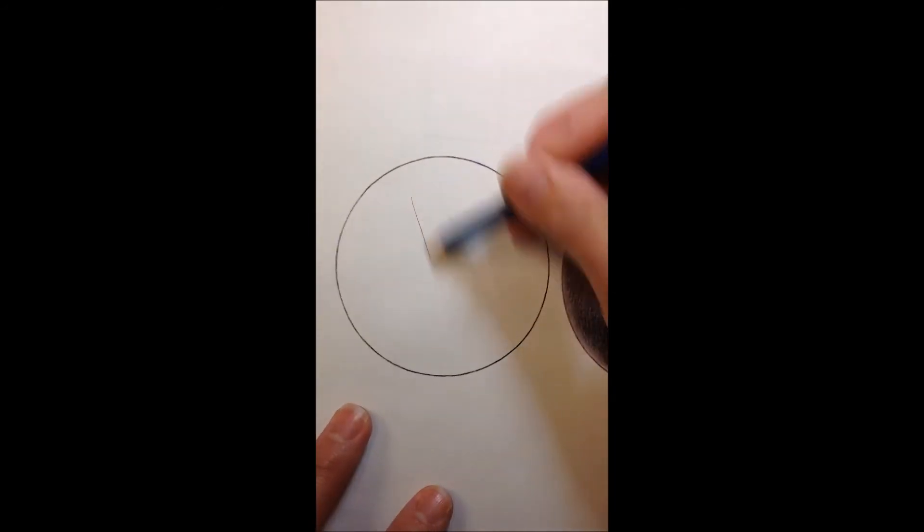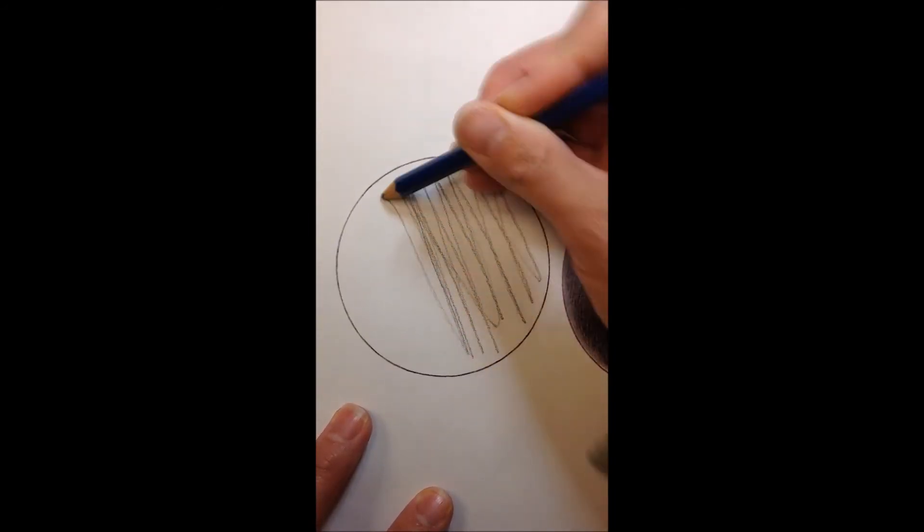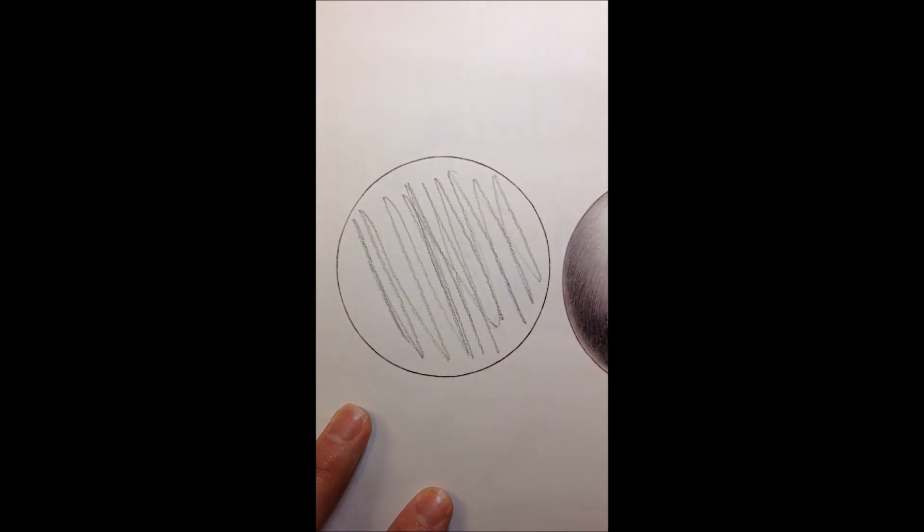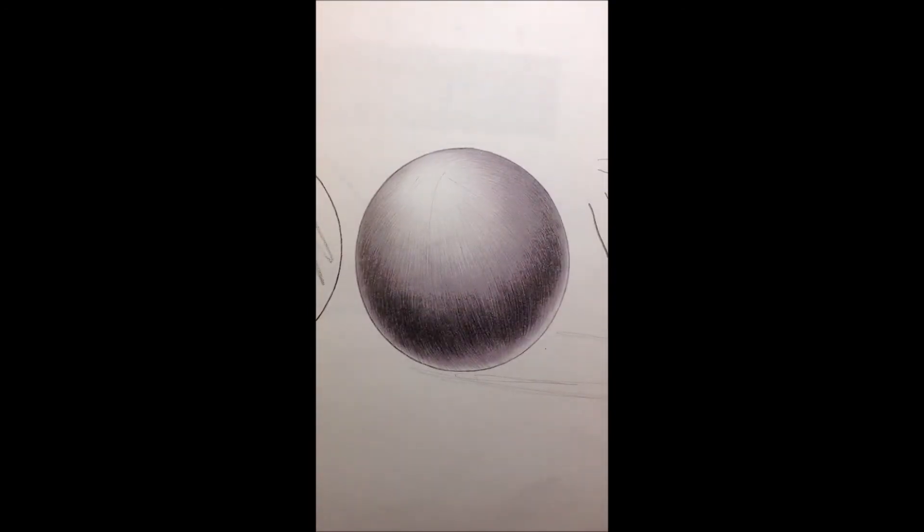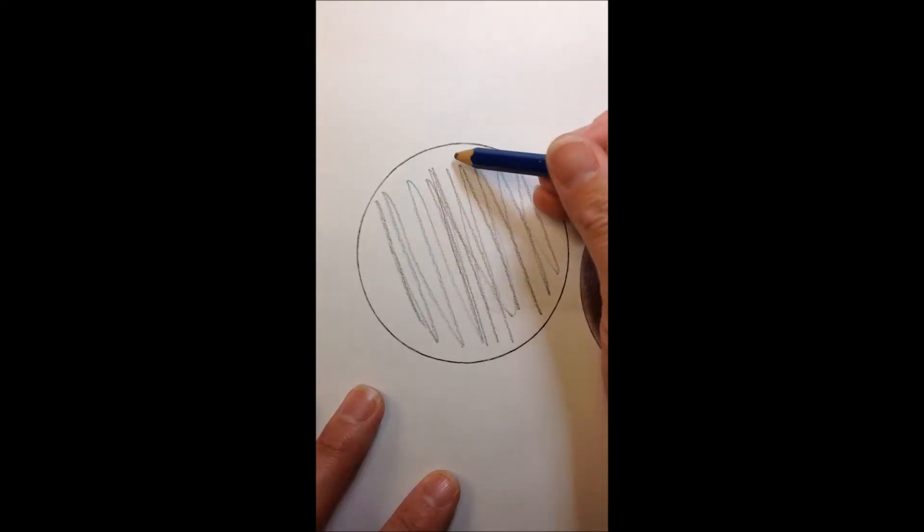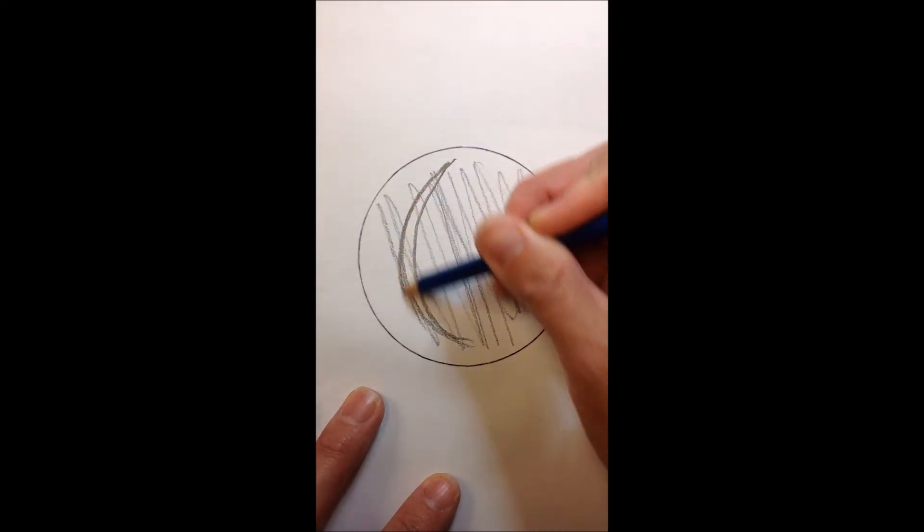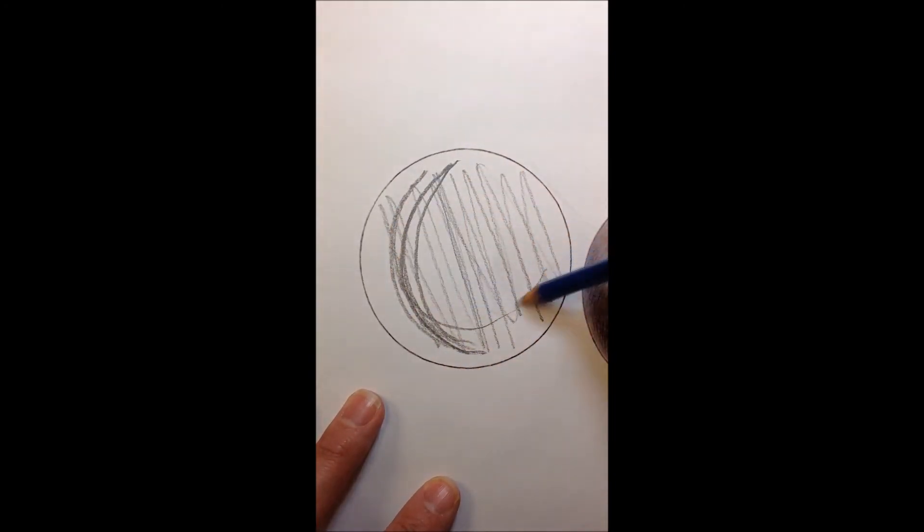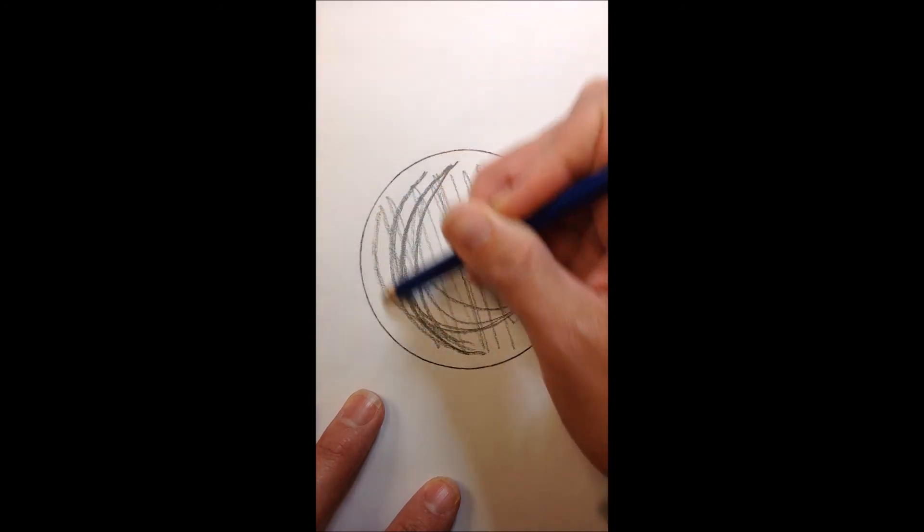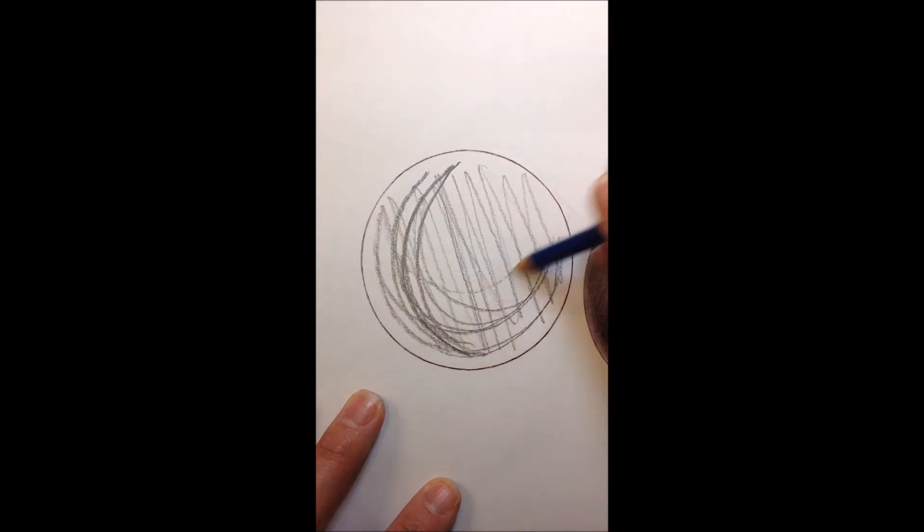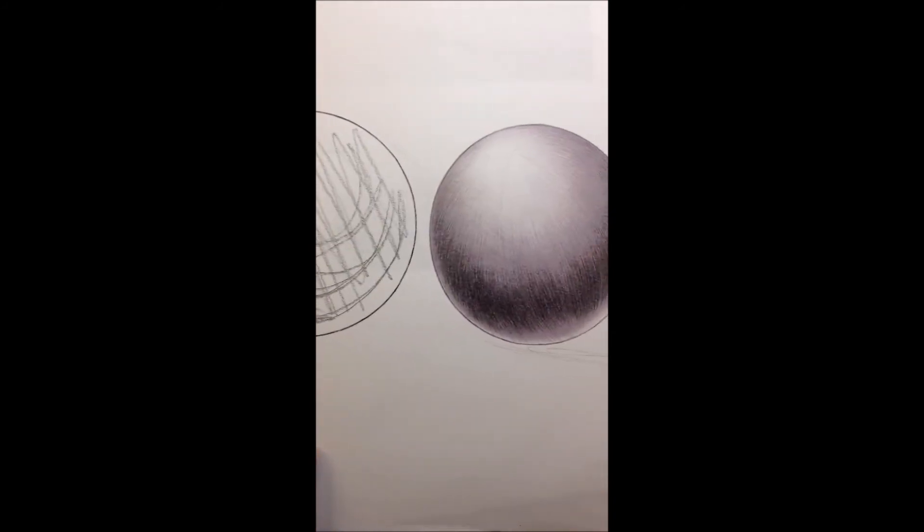But if you do that, if you just apply it straight like this, what happens to the shape? Yeah, it starts to look really flat. That's right. So if you're going to apply value like that, you want to make sure that you're doing it round, so it goes around the shape, because that'll help continue and make that shape look round.